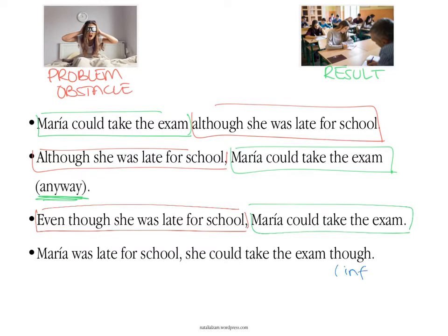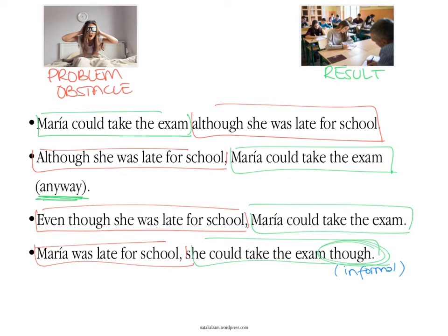In an informal way — probably not in writing but in speaking — you could say: Maria was late for school. She could take the exam though. Simply adding 'though' at the end of your result sentence. But as I say, this is a bit informal.